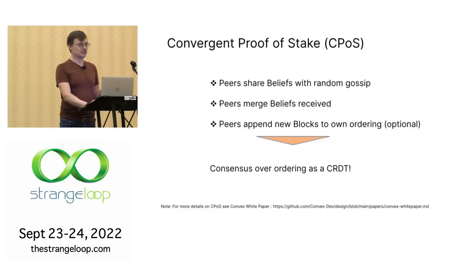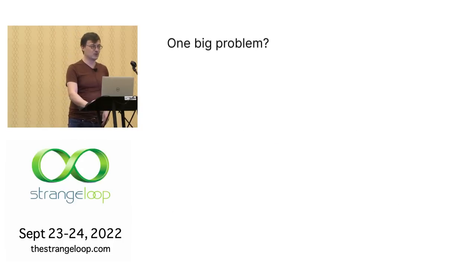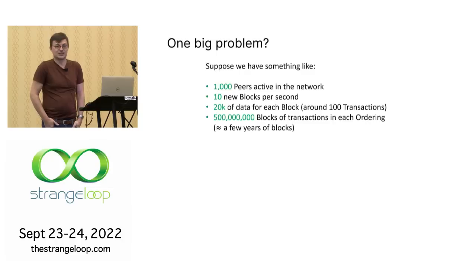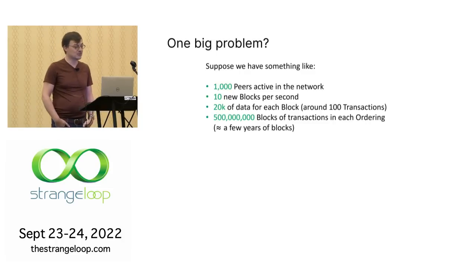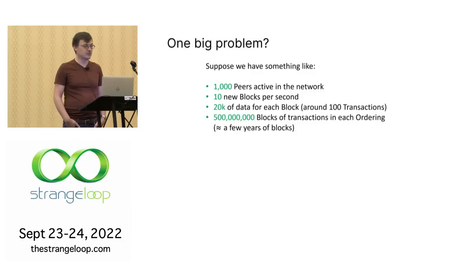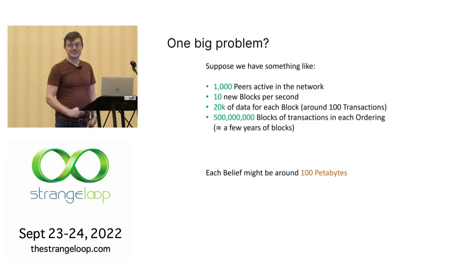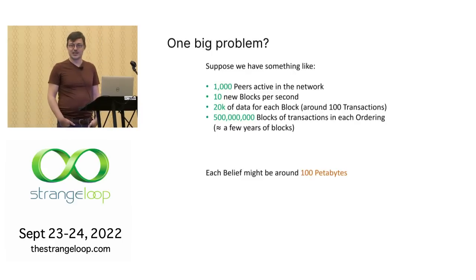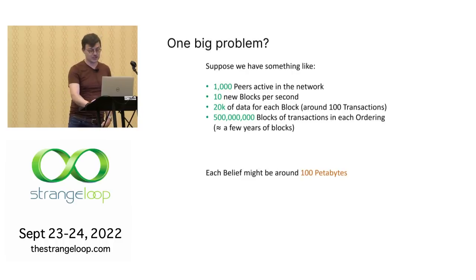There's just one big problem: we have a size problem. With 1,000 peers on the network, maybe 10 blocks a second, maybe 20K data each block — a reasonable expectation for a global-scale network — you're going to have a lot of history. These orderings are going to be long. You might have 500 million blocks worth of transactions going back a few years. Each belief might be about 100 petabytes at that scaling. So this is not going to work — it's simply not going to scale.